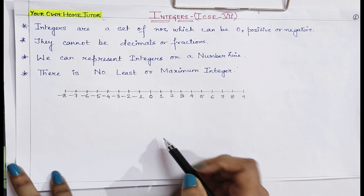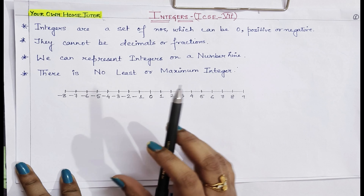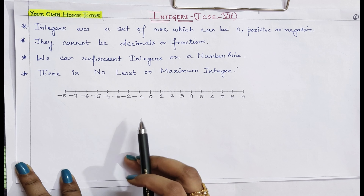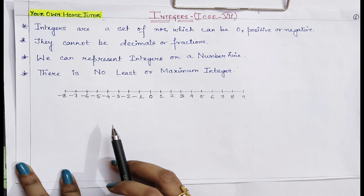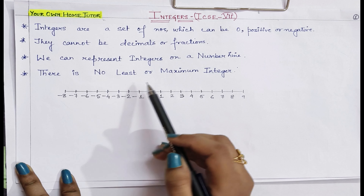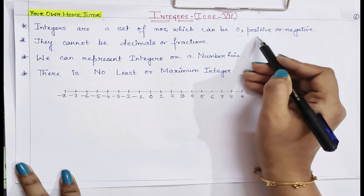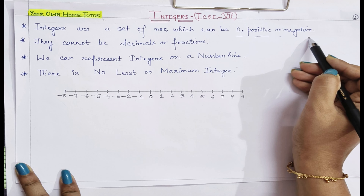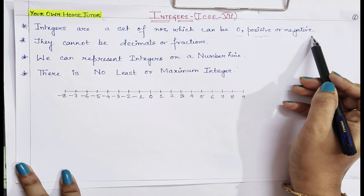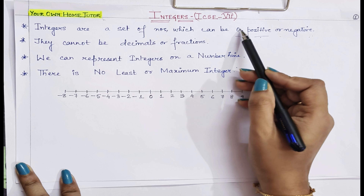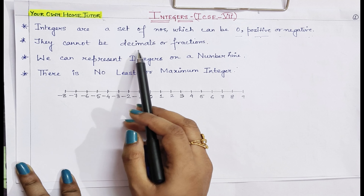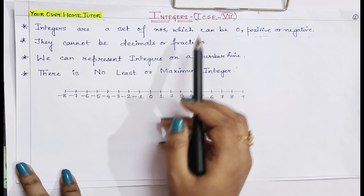What are integers? Integers are those numbers from the set of various types of numbers, which I have already explained in my previous lectures. You can go and watch that video. Integers are one of those types of numbers which can be 0, positive, or negative. Any positive number is an integer, any negative number is an integer, and 0 itself is also an integer. But we have to note that a decimal or a fraction cannot be called an integer.